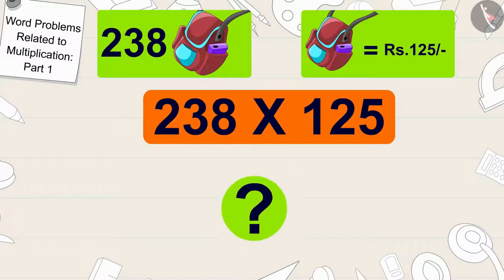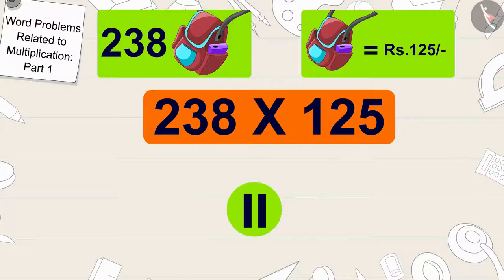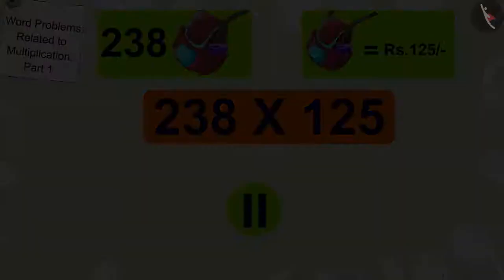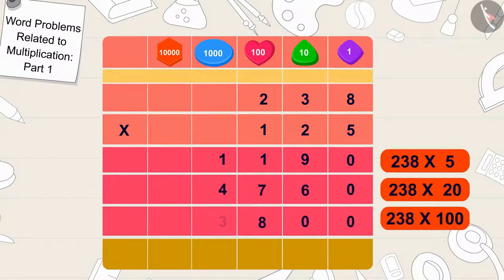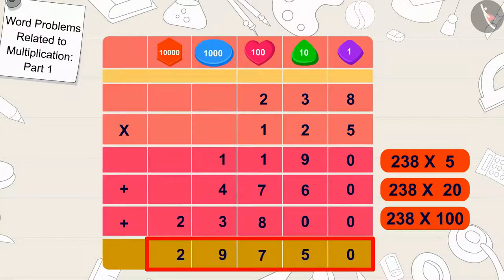Children, can you find the answer to this multiplication? If you want, you can stop the video and find the answer. In this way, we can find the answer: 238 times 125 is 29,750.